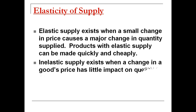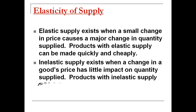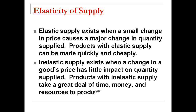Inelastic supply exists when a change in a good's price has little impact on the quantity supplied — price doesn't affect quantity supplied very much. Products with inelastic supply take a great deal of time, money, and resources to produce. Examples include oil, gold, silver, other commodities, and beachfront property — things where even if the price went up, suppliers wouldn't be able to produce much more of them.